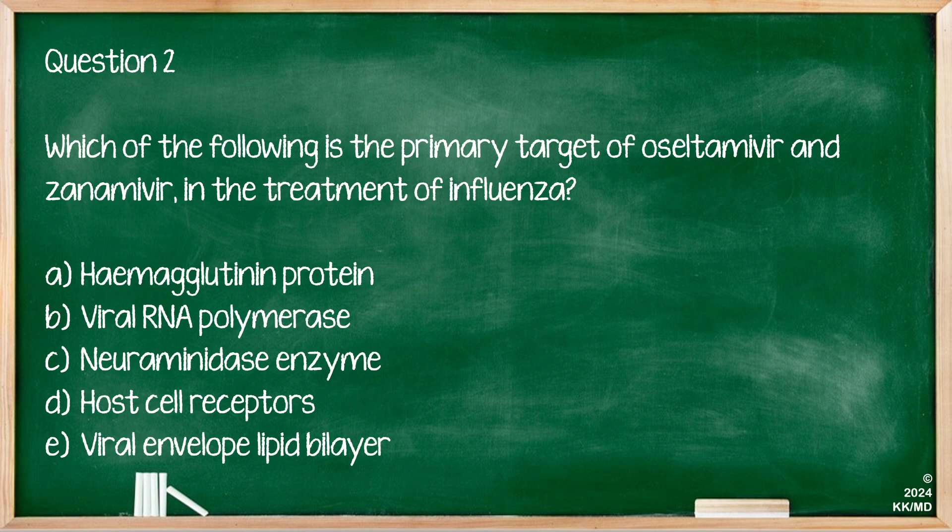Question two: Which of the following is the primary target of oseltamivir and zanamivir in the treatment of influenza? Options are: hemagglutinin protein, viral RNA polymerase, neuraminidase enzyme, host cell receptors, or the viral envelope lipid bilayer. Thinking back to the diagram of the influenza virus discussed earlier — these two drugs are inhibitors of the neuraminidase enzyme. Recall also that amantadine, which is sometimes used, is an inhibitor of M2.